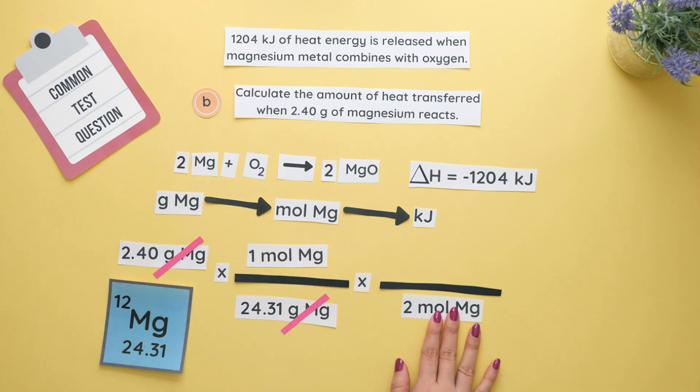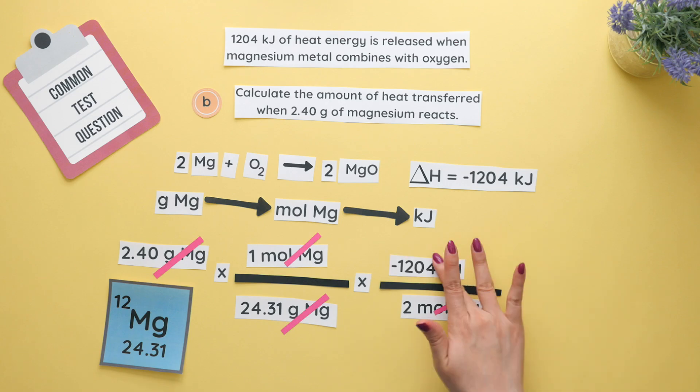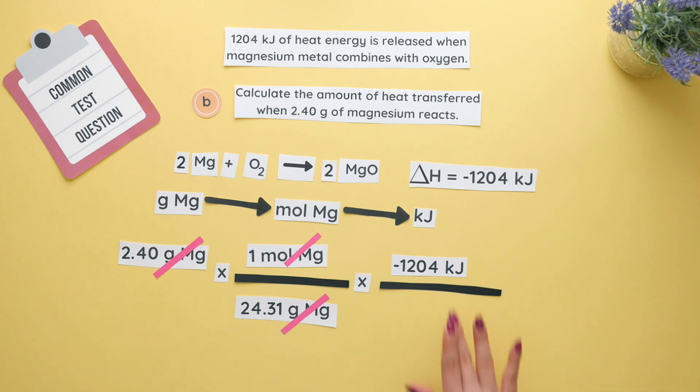We'll place two moles of magnesium on the bottom since we want to align our units of moles to cancel out and on top we will have our kilojoules since this is what we're looking for. Multiply each number straight across then divide by the numbers multiplied and round to three sig figs since our given value had three sig figs.